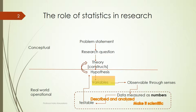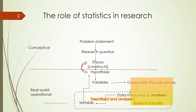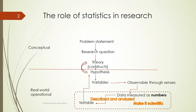Based on that hypothesis, we identify variables — what's going to change in relation to our input and output. We observe them and collect information about those variables. When we collect data, we collect them as numbers and use these numbers to test our hypothesis. Based on our findings and testing, we inform the hypothesis and the theory.